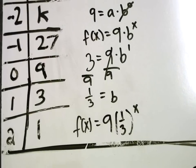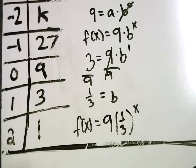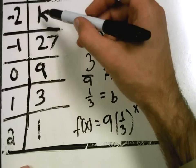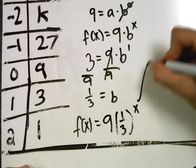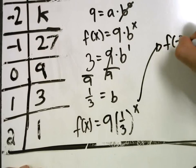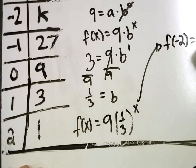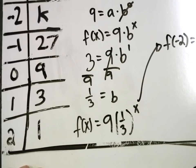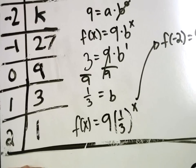So, that means I'll plug a negative 2 into my function. Negative 2 into my function. And that will tell me what K is. There it is. You can see it now. There's the negative 2.